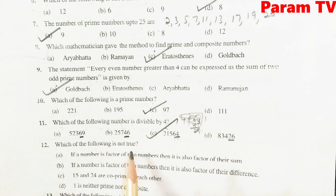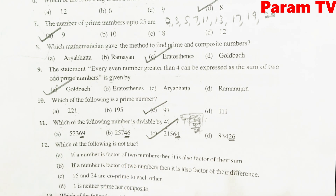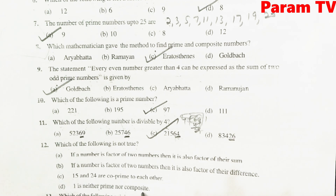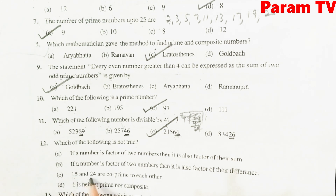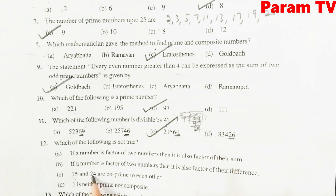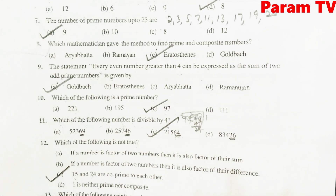Which of the following is not true? देखिए — '1 is neither prime nor composite' ये तो ठीक है. '15 and 24 are co-prime' — ये नहीं, क्योंकि 3 के table में 15 भी आता है और 24 भी आता है, तो 3 इनका common factor है. तो ये co-prime नहीं है. C is the right option.